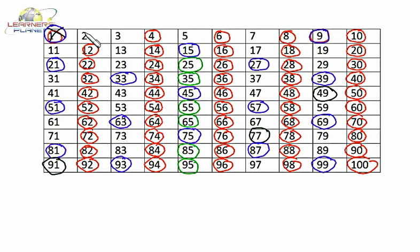Then we have already discussed about number 1, which is neither prime nor composite. Apart from that, we discussed that in all there are 25 prime numbers from 1 to 100. Here you can see there are 25 numbers which are not circled. There are 4 prime numbers which have 1 digit and there are 21 prime numbers which have 2 digits.